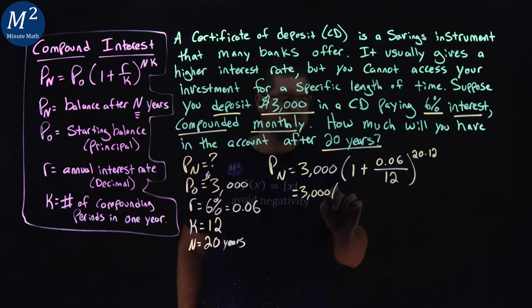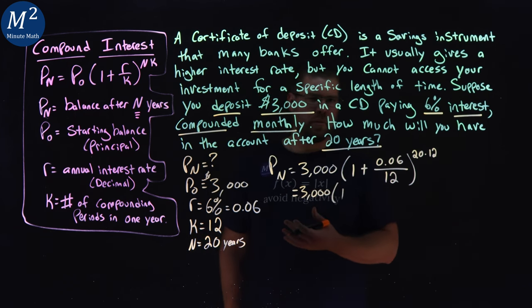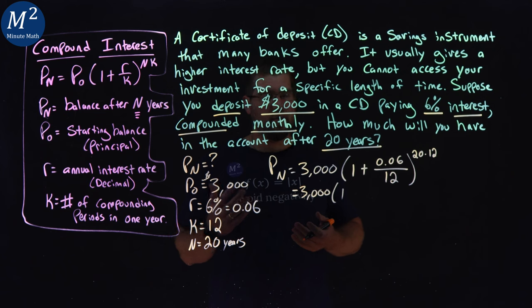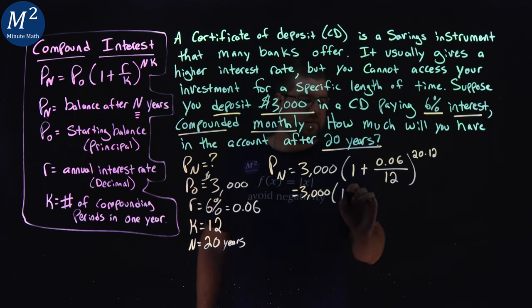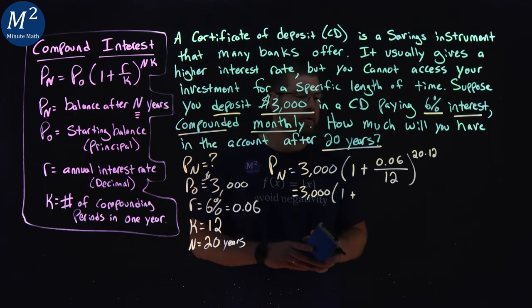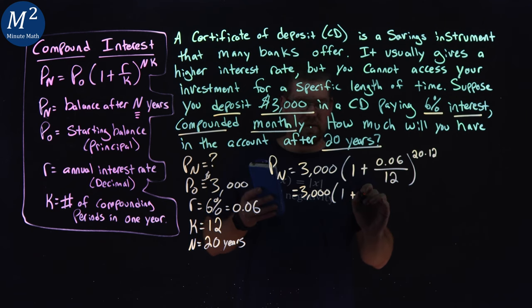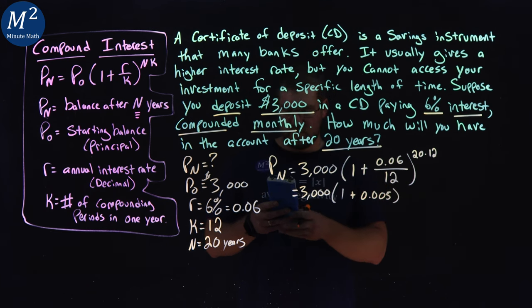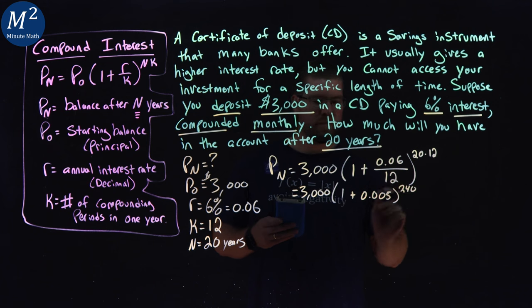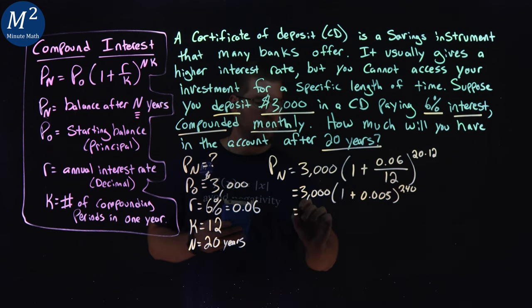So, 3,000 here. And showing your work is always important, so your teacher, or if I'm a teacher, can see your thought process. 1 plus 0.06 divided by 12 here. My calculator is 0.005 to the power of 20 times 12, which is 240.